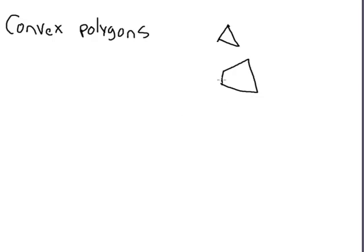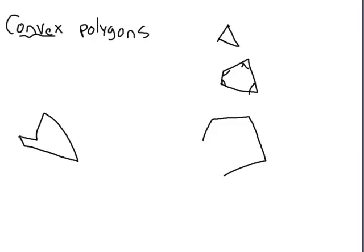By the end of this tutorial you should know some rules that apply to their interior angles. So what does convex mean? Let me give you an example of a shape that's not convex. This shape is not convex. This is convex, this is convex. Here's another convex shape. This one is not convex because it has a portion which is concave. Concave means it kind of looks like a cave — it bends back into itself.